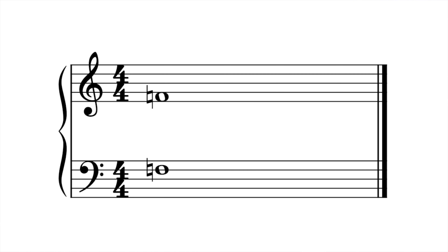In previous episodes, we have learned about sharps and flats. Now let's take a look at the third sign in the group of accidentals called naturals. This is what a natural looks like. When you see a natural sign in front of a note on the music,